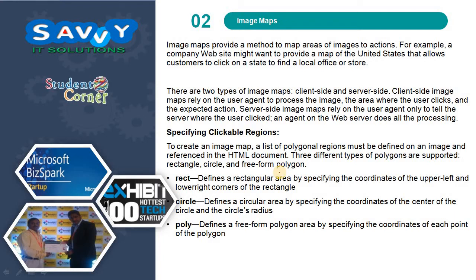To create an image map, a list of polygonal regions must be defined on an image and referenced in the HTML document. Three different types of polygons are supported: rectangle, circle and free-form polygon. Rect defines the rectangular area by specifying the coordinates of the upper left and lower right corners. Circle defines the circular area by specifying the coordinates of the center and the circle's radius. Poly defines a free-form polygon area by specifying the coordinates of each point on the polygon.